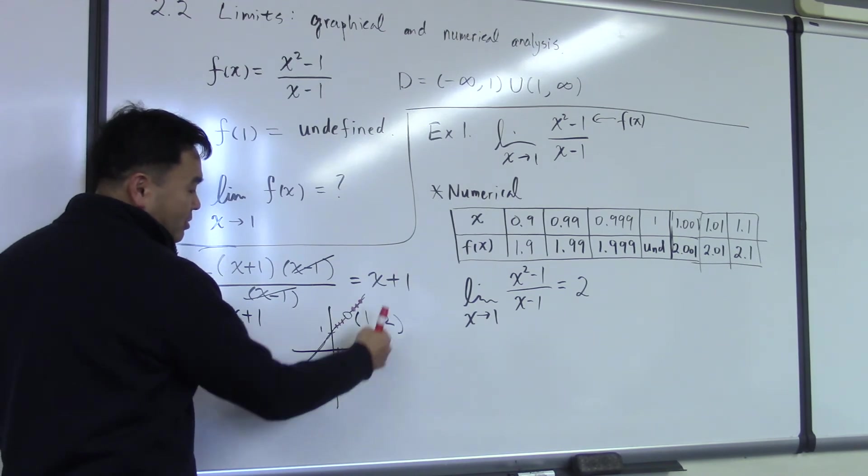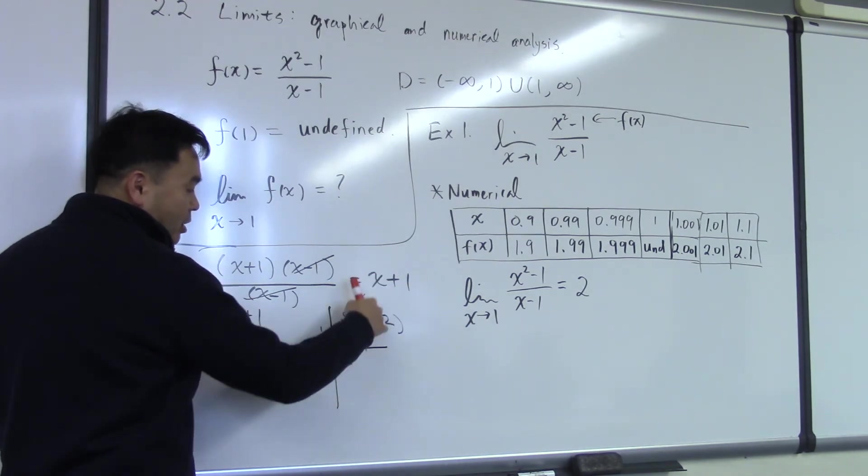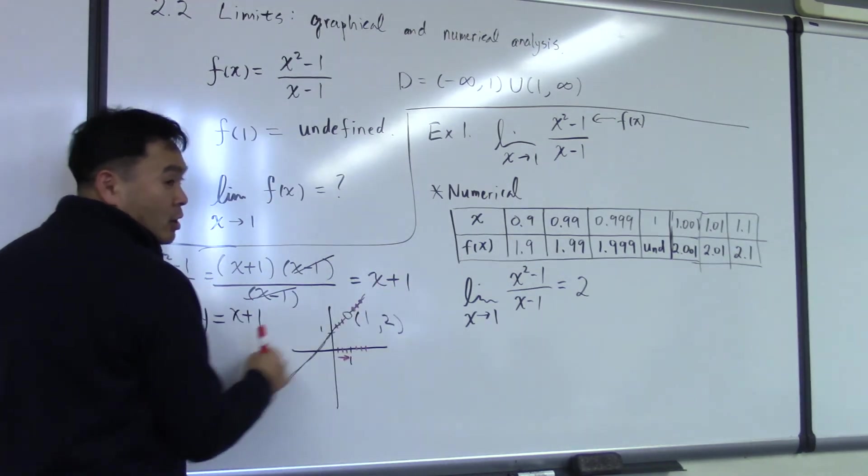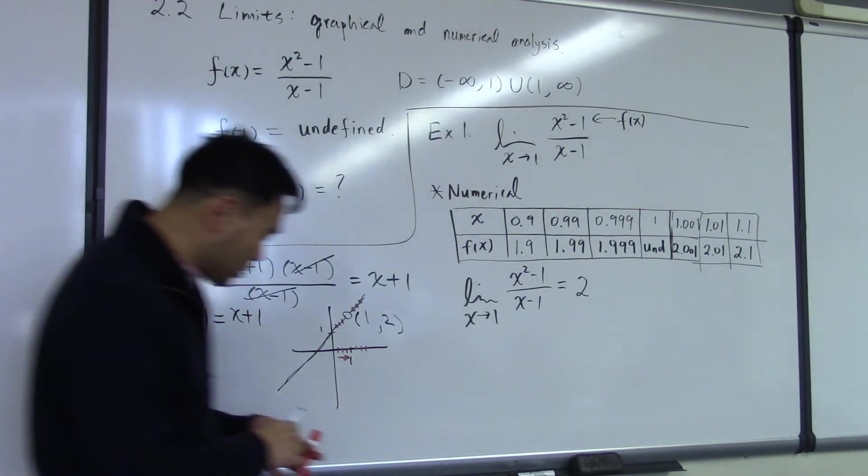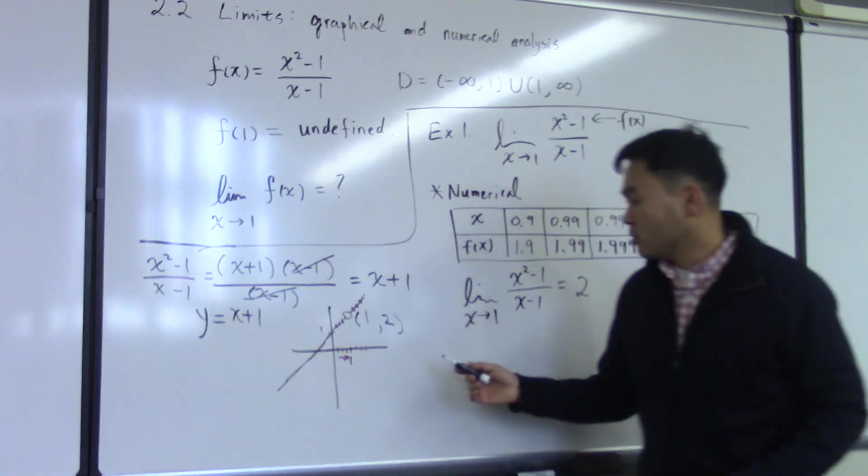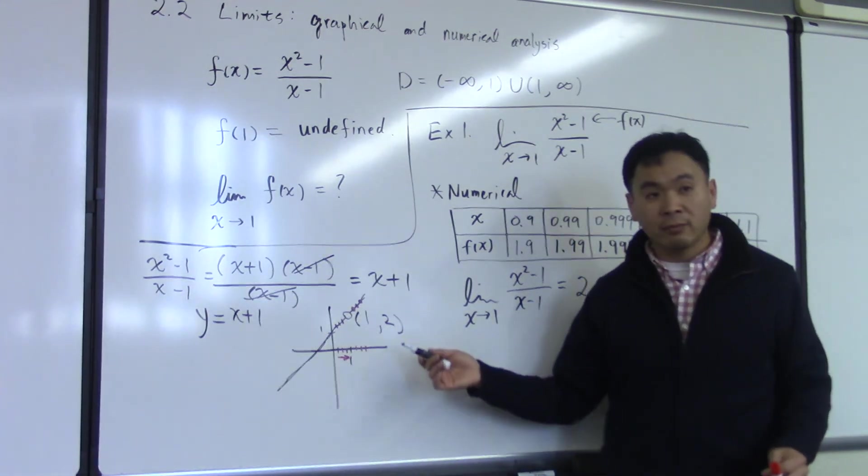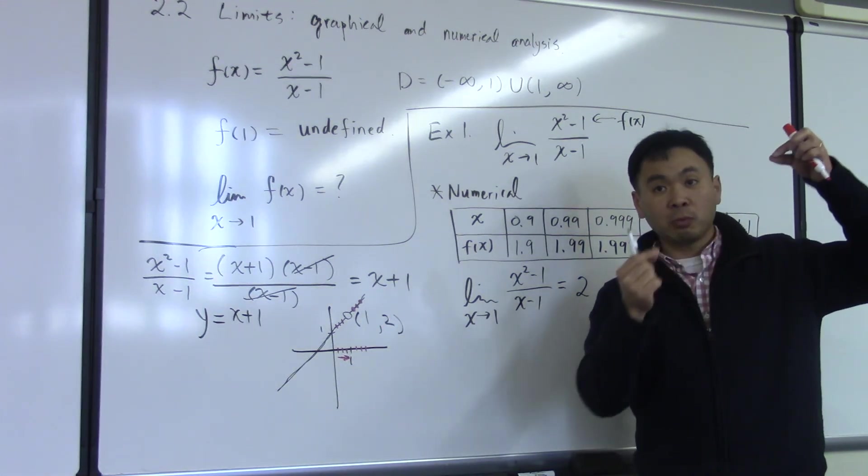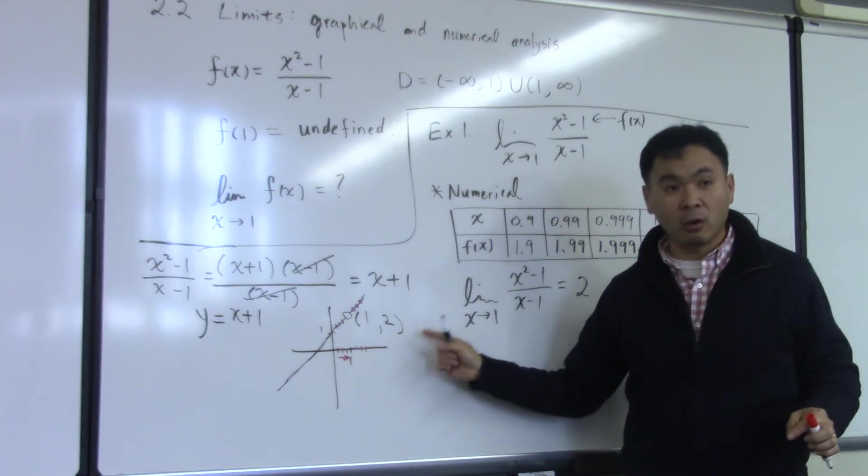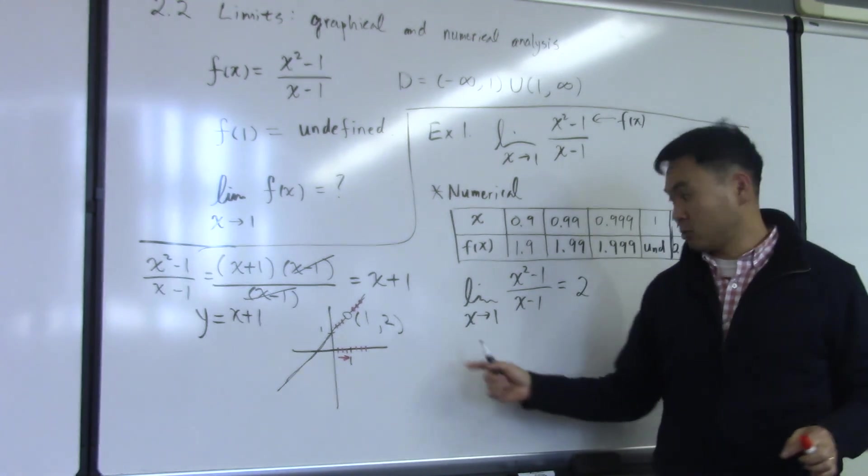Same thing happens on the right side. The height becomes closer and goes down closer and closer to 2. That's how you can figure out limit by using the graph. If you use the graph and you investigate the altitude of each point, then you can figure out where the limit goes closer and closer to.